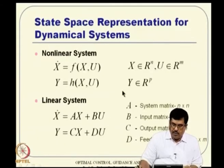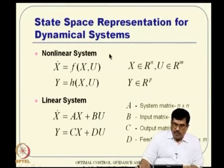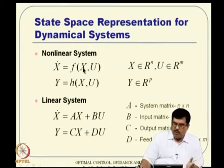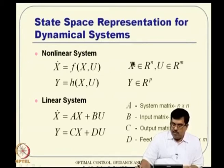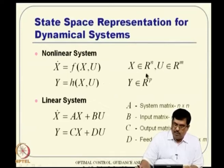We have broadly two classes of systems we will discuss: nonlinear systems and linear systems. When we talk about nonlinear systems, we represent the state equations as x-dot equal to f of x, u. Typically the time variable t is not there explicitly, where x-dot represents the derivative with respect to time. The state variable dimension is R^n, meaning n number of states. Control belongs to R^m, meaning u can be m-dimensional, and the output of interest can be p-dimensional.